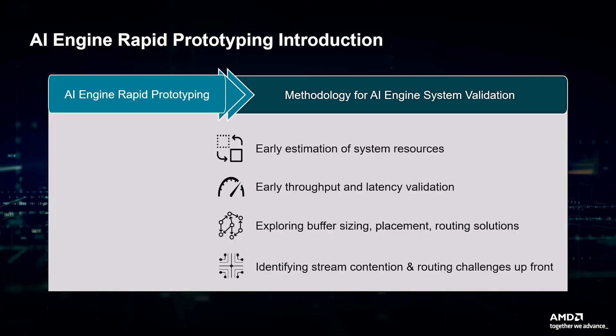For algorithms mapped to the AI-Engine, you can review the Vitis libraries to see if any existing library block element matches your needs. If so, run quick simulations to determine the throughput and latency performances of those library blocks. Otherwise, it is useful to develop and investigate candidate vectorization options and consider how to use the SIMD processor to improve throughput. This might involve coding kernels in isolation to identify the number of cycles required to loop through the data.